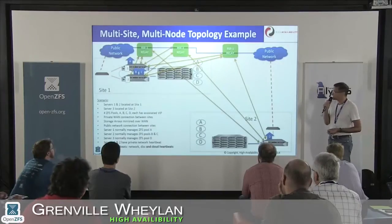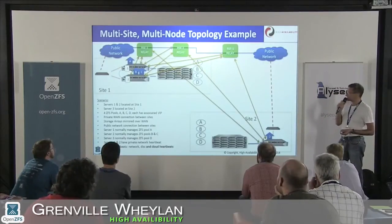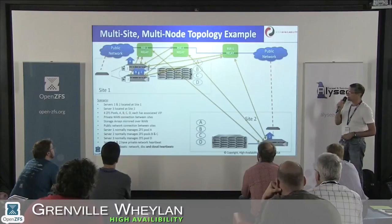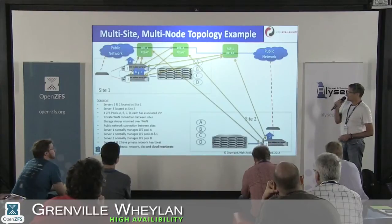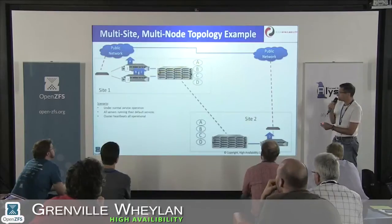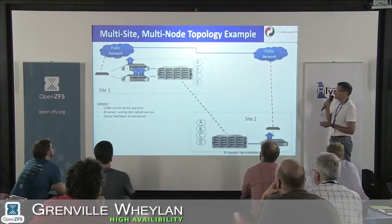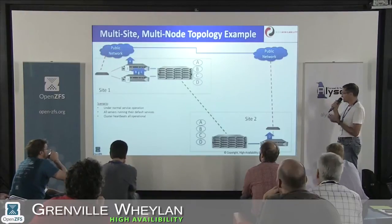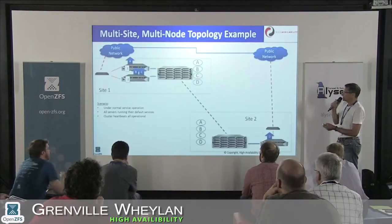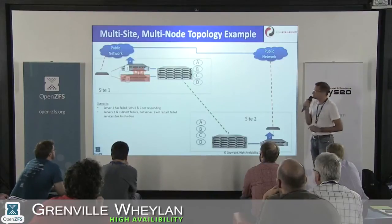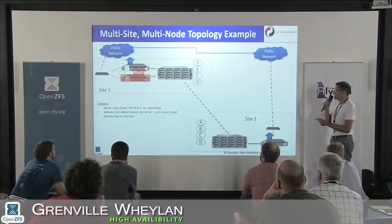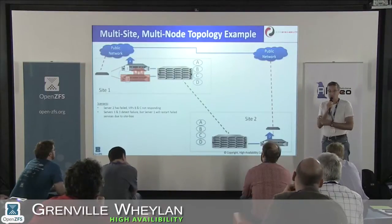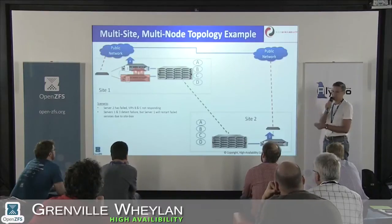What we've implemented fairly recently is the idea of a stretch cluster using cloud-based heartbeats. We have relay stations running anywhere outside the network, and we've set up relayed heartbeats via this connection as well. Under normal service, pool A runs on server one, B and C on server two, and D on server three. If server two crashes, the B and C VIPs are no longer responding. Server one and server three detect this, but we restart the service on server one because we don't want a geographical failover when we have a system locally available.